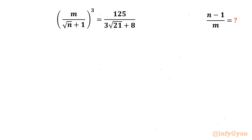Welcome back to Infigyan, my dear friends. In this video we have another very interesting question from Radical Maths. We have to evaluate the expression (n-1)/m, where m and n are real numbers. The given equation is m over (√(n+1))³ = 125 / (3√21 + 8).